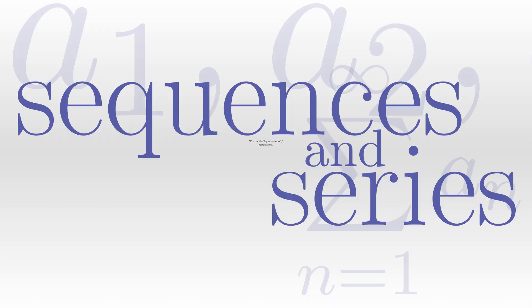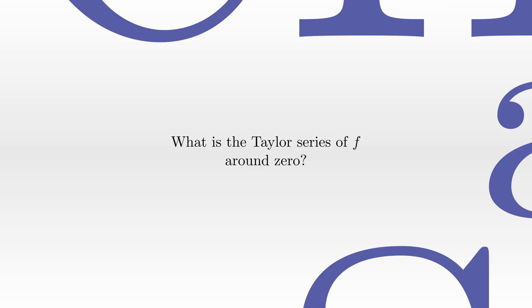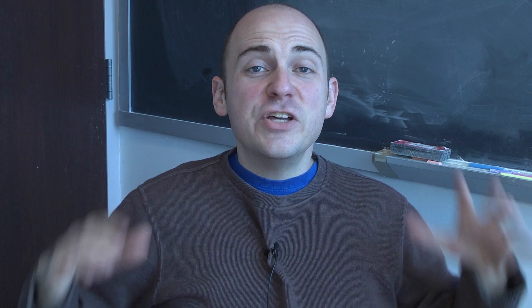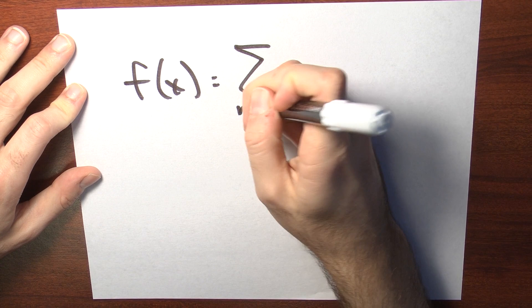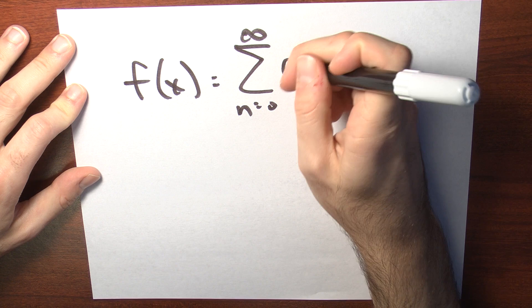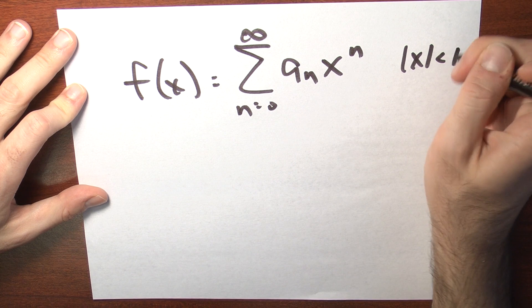Taylor series. Suppose I know that f is represented by a power series. Suppose that I know the function f is given by a power series — the sum n goes from 0 to infinity of some coefficients a sub n times x to the n, at least when x is between negative r and r.